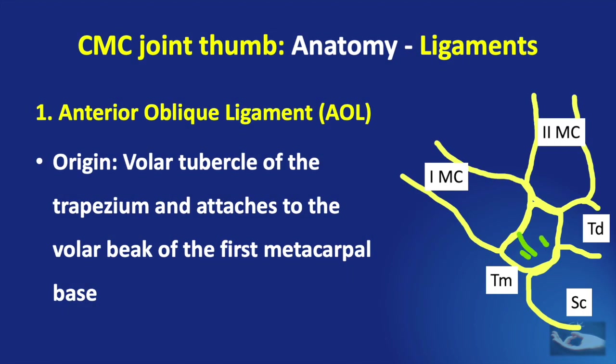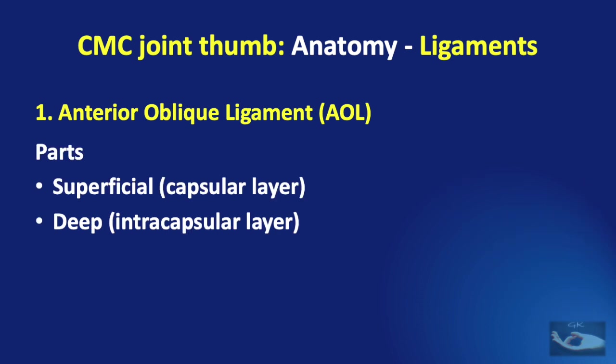The anterior oblique ligament originates from the volar tubercle of the trapezium and attaches to the volar beak of the first metacarpal base. It consists of two parts: the superficial part of the capsular layer and the deep part, which is partly intracapsular.